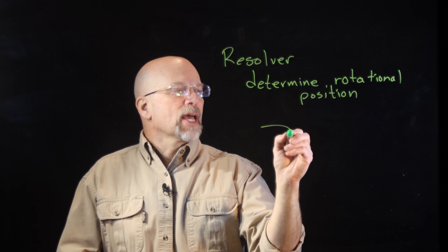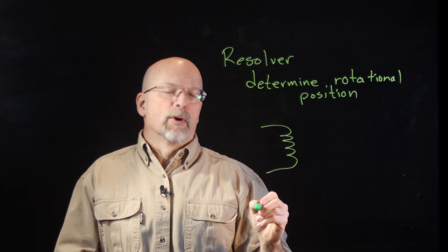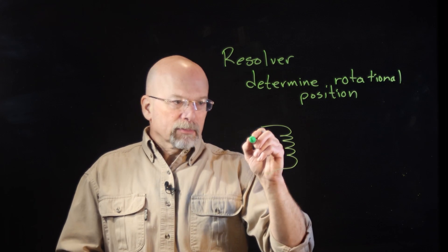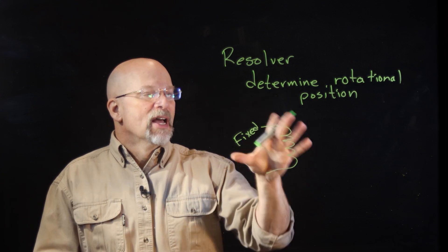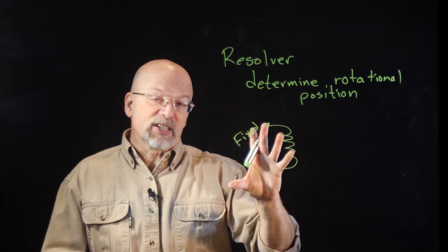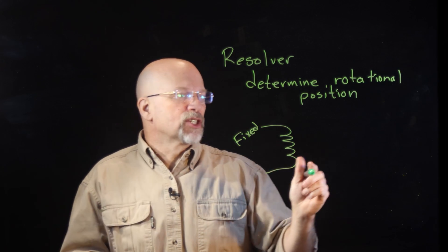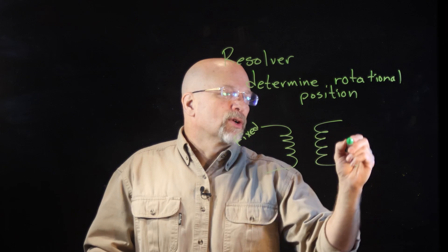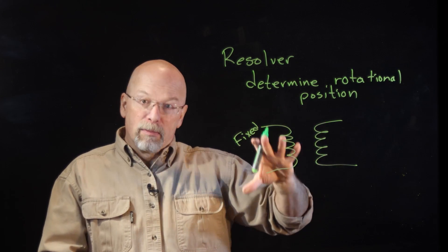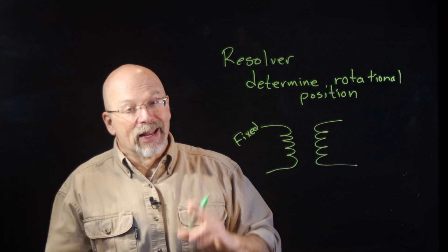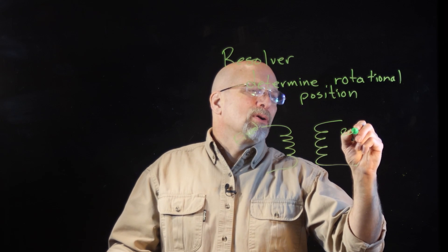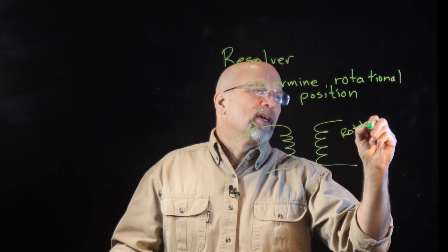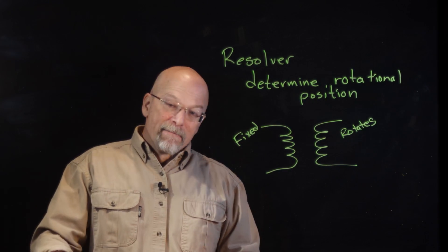How does a resolver determine rotational position? Well, what you do is you take one coil, and this one is fixed. It doesn't move, it's stationary. And then you take another coil, and this one you put on some sort of a shaft that rotates.